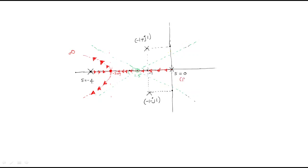At k = 0, the root locus starts at the open loop poles. As gain increases toward infinity, the branches travel toward the infinite zeros along the asymptotes. For the pole at s = 0 and the pole at s = minus 4, the gain reaches infinity as the roots travel to infinite zeros.